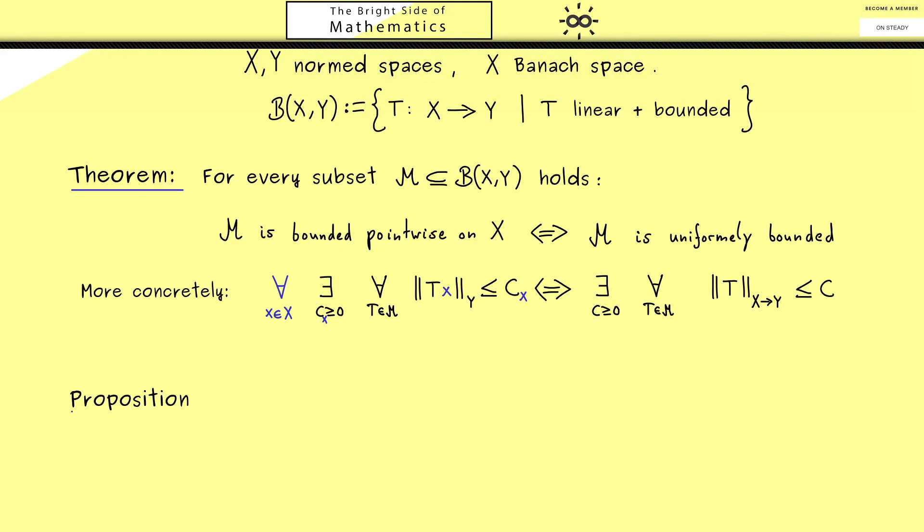Of course the proposition needs the same assumptions as before, and we also use the same notation for the bounded operators. Now what happens when we take a whole sequence Tₙ from the bounded operators when we also know that the limit Tₙx exists for all x in X?